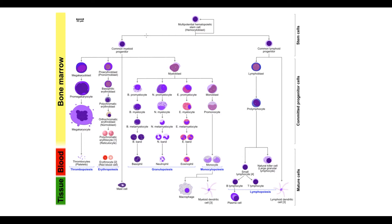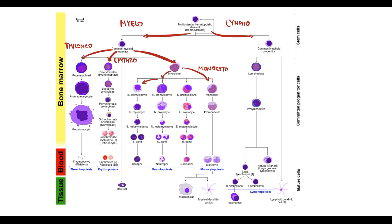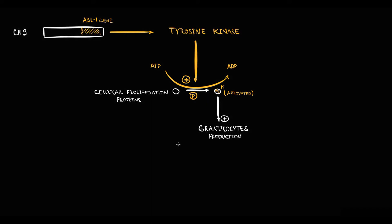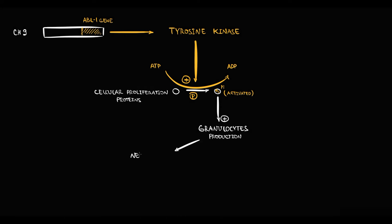As we know, hematopoiesis can be subdivided into myelopoiesis and lymphopoiesis. Myelopoiesis can be subdivided into erythropoiesis, thrombopoiesis, monocytopoiesis, and finally granulopoiesis. The final products of granulopoiesis include neutrophils, basophils, and eosinophils. So basically, the higher the amount of activated proteins stimulating granulocyte proliferation, the higher the production of neutrophils, basophils, and eosinophils — and the higher their quantity in the blood.